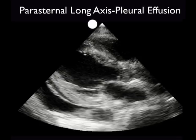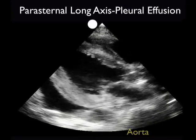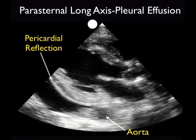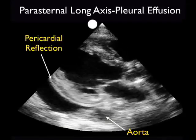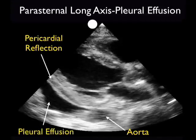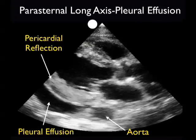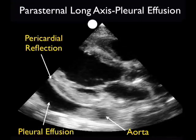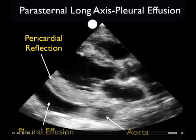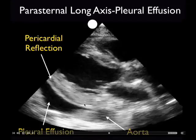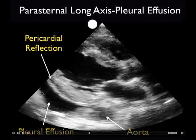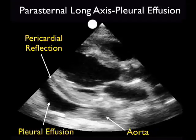Here's a video clip showing a potential mimic of a pericardial effusion. We identify the descending aorta as a cylinder cut in cross-section posterior to the left atrium, and identify the posterior pericardium coming off just anterior to the descending aorta. Note the presence of a large dark or anechoic fluid collection, but note that it layers out posteriorly to the pericardium. Thus this fluid is within the pleural cavity and not within the pericardial cavity — a pleural effusion.